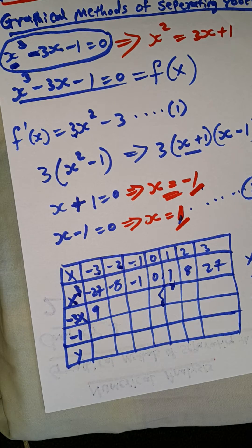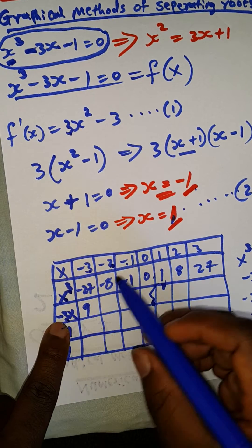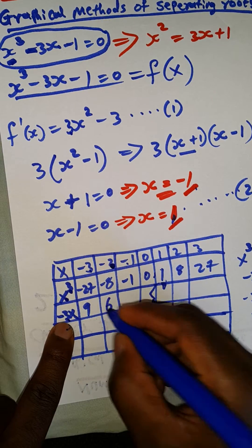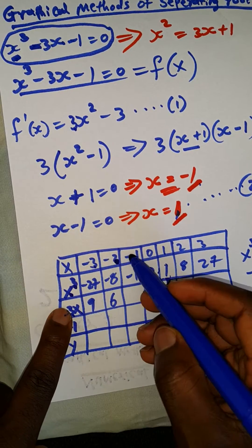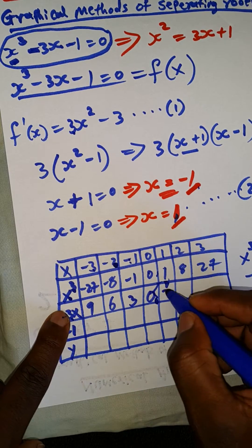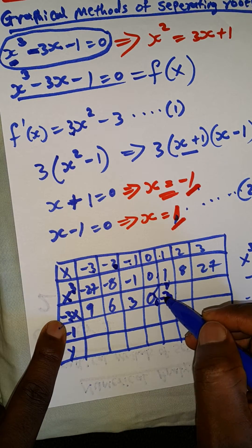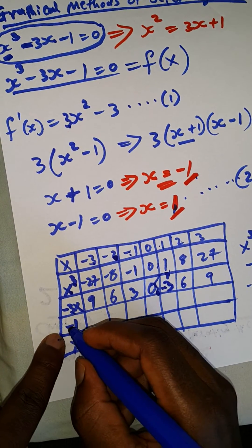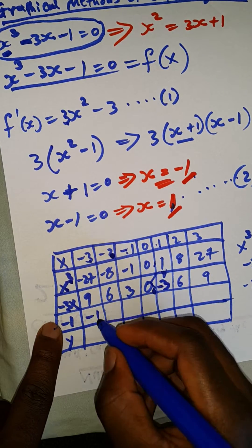For the second column, minus 3x: when x is 2, that is 3 times 2 which is 6, then minus gives us minus 6. When x is minus 3, minus 3 times minus 3 is 9, so minus 3x gives us positive 9. The values go: 9, 6, 3, 0, minus 3, minus 6, minus 9. For the constant column, there is no x, which means the value stays the same as minus 1 throughout.